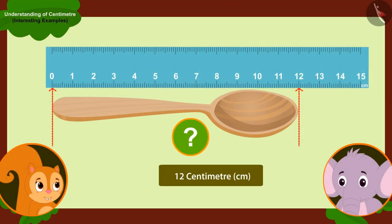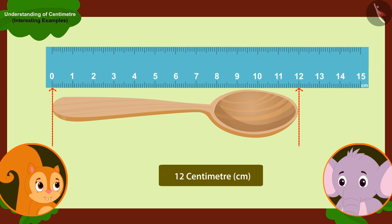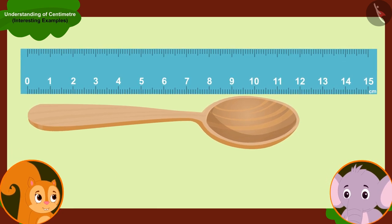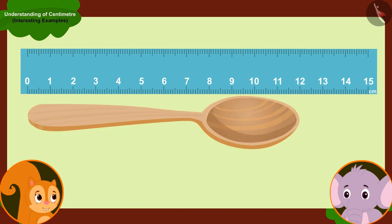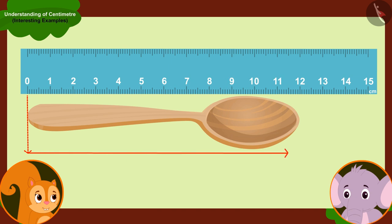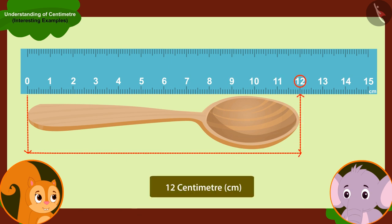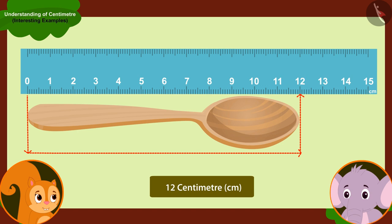Chanda could not understand how Appu found this out. Appu said to her, whenever you have to measure the length of any object, you place it next to the ruler in this way and start measuring from zero. The number which is reaching the other end of your object — the length of your object will be that centimeter.